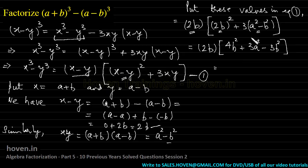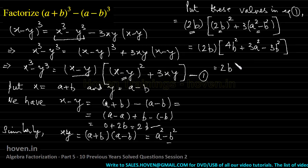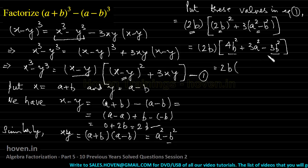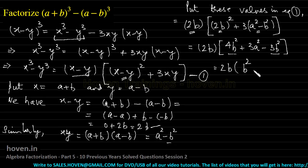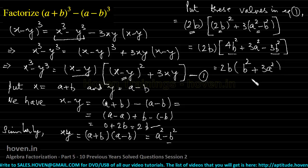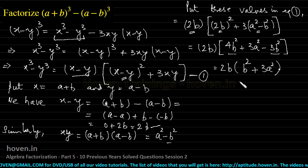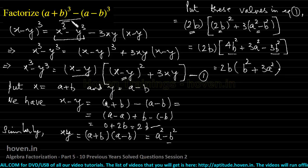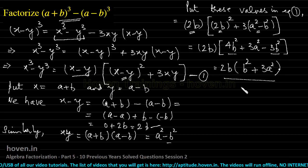We have just opened the brackets and collected like terms. This cannot be simplified further. Therefore, the factorization of (a+b)³−(a−b)³ is 2b(b²+3a²), which is the answer.